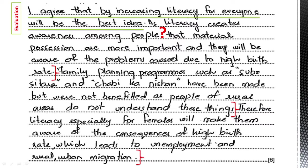So the student gave a reason and two supporting points — this is developed. Now for the second viewpoint — family planning — the student explained it with an example. They identified the problem with family planning programs: 'Family planning programs such as Sub-Sitara have been established but were not beneficial as people in rural areas do not understand these things.' They gave the example of Sub-Sitara organization and explained that it could not benefit people in rural areas, focusing specifically on rural areas and explaining why — because of illiteracy. This second point of view is also well developed.